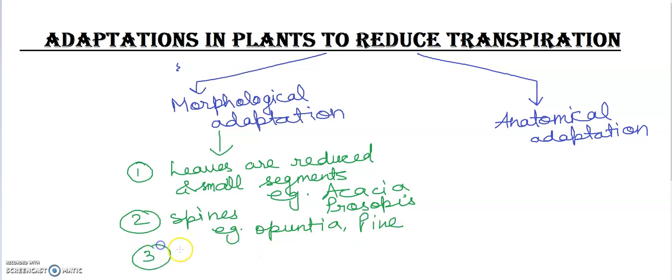Sometimes leaves may be folded, rolled, and may be shed. These plants may shed their leaves as in deciduous plants. So these are the morphological adaptations - leaves are reduced and divided into small segments.